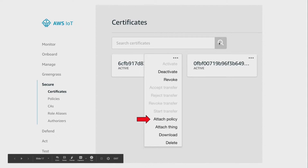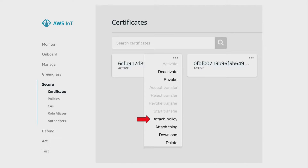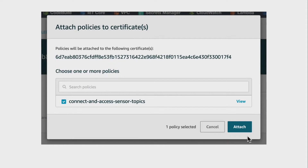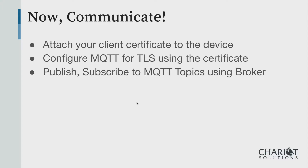You attach a policy to the certificate, and the certificate is attached to a device. You can search, pick one, or create one in the console. In terms of programming — if you're using Arduino, you pick an MQTT client library, an SSL library for encryption, and a Wi-Fi library. There are sketches we'll use in the Arduino lab this afternoon, and we'll put those up on GitHub for everyone to look at later.